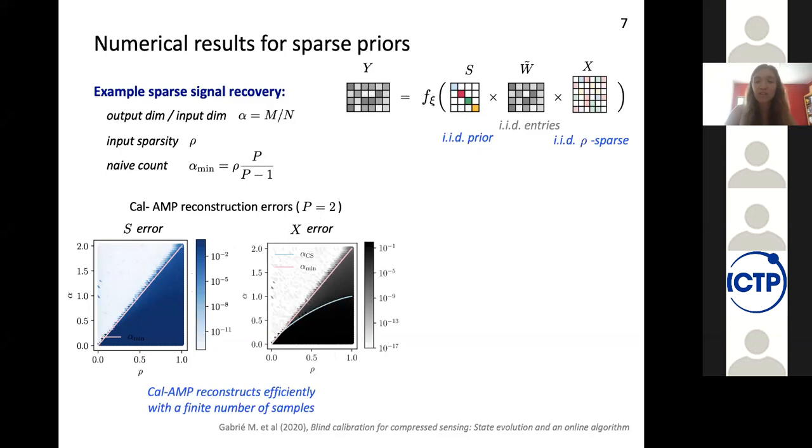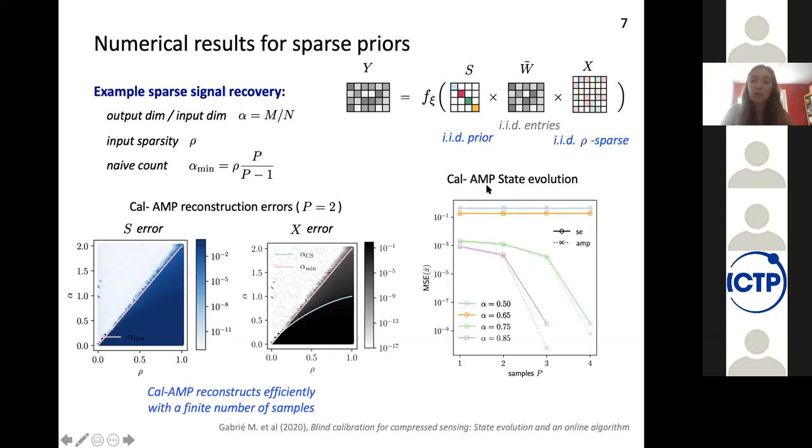And the second thing that we can check is that indeed the state evolution that we propose is matching the performance of the AMP algorithm. And here, the state evolution is in solid line while the AMP is in dotted lines. And for different sparsity and for different input to output ratios and for different number of samples, we indeed find a very good agreement.